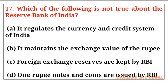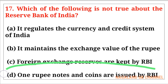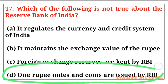Question number seventeen: Which of the following is not true about the Reserve Bank of India? The correct answer is option number D, that is one rupee notes and coins are issued by RBI.